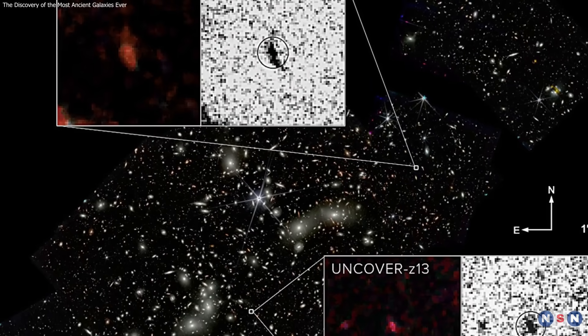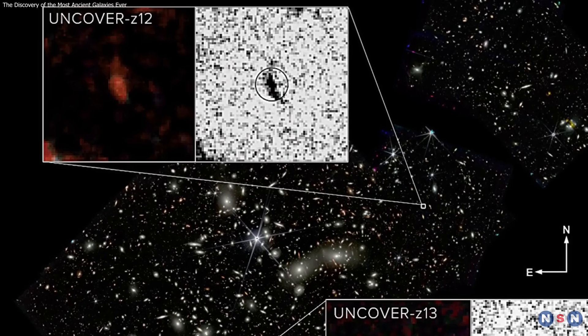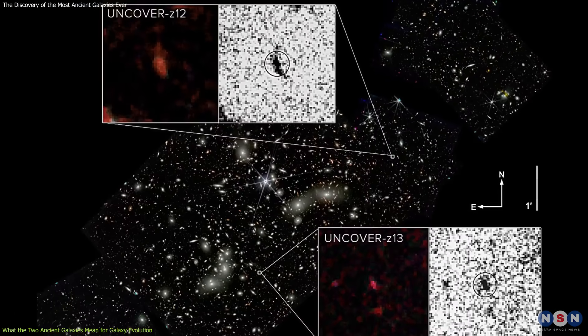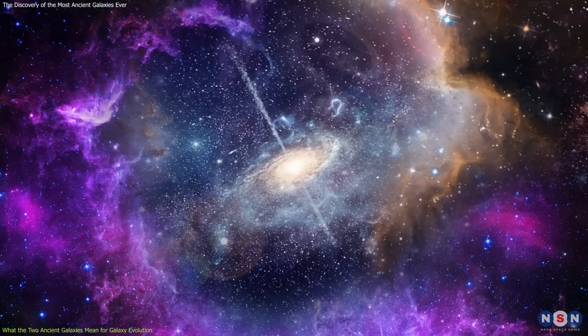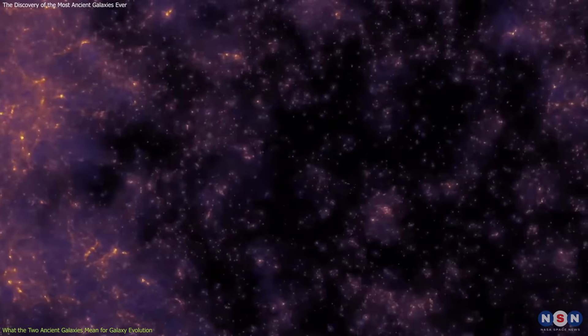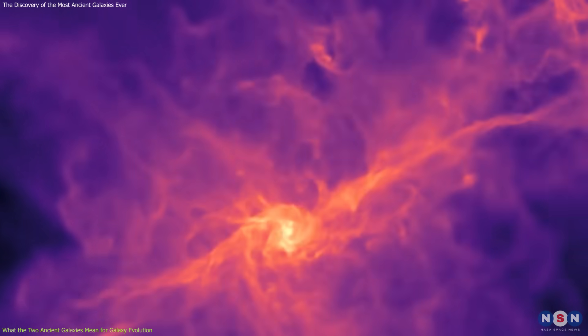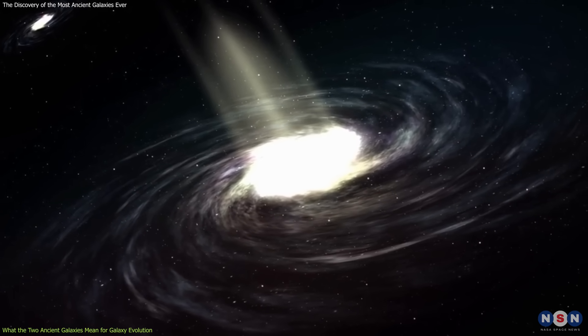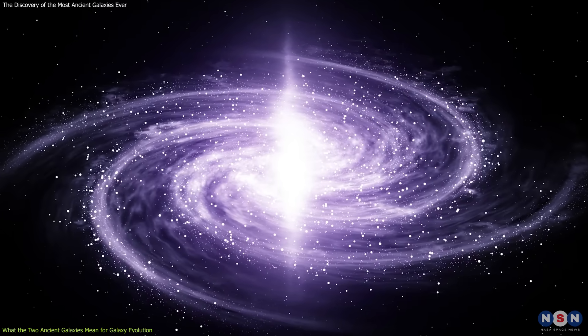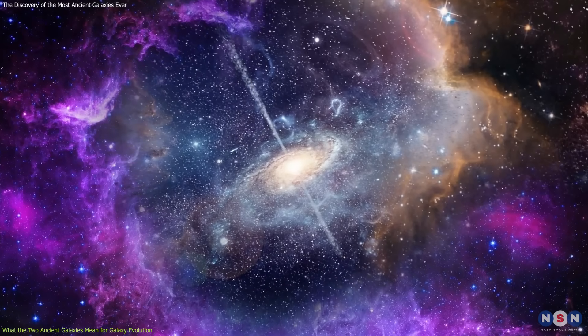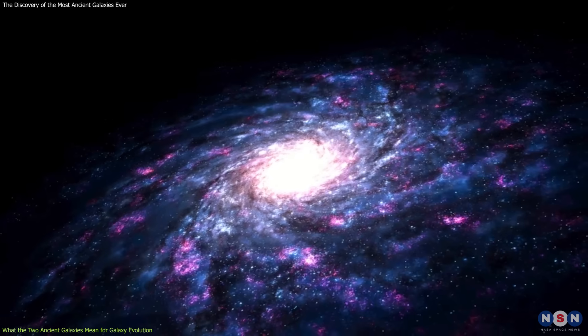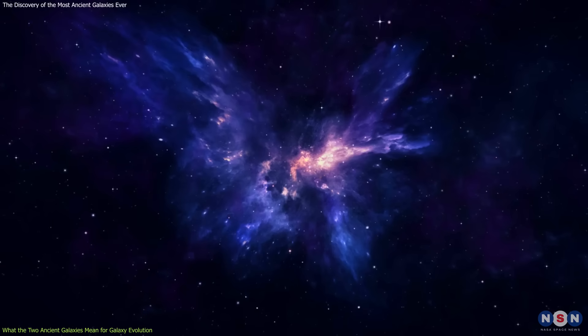What does the discovery of the two galaxies mean for the fields of cosmology and galaxy evolution? What clues do they provide about how the earliest galaxies might have formed and interacted in the universe? The discovery of the two galaxies has important implications for cosmology and galaxy evolution, as it sheds light on some of the mysteries and challenges of the early universe. One of the mysteries is how the first stars and galaxies formed out of the primordial gas that filled the universe after the Big Bang. The discovery of Uncover Z12 suggests that some of the first galaxies were very small, compact, and efficient in converting gas into stars, forming the seeds of the cosmic structure. The discovery of Uncover Z13 suggests that some of the first galaxies were very large, elongated, and inefficient in converting gas into stars, forming the outliers of the cosmic structure.